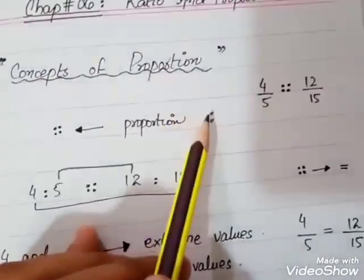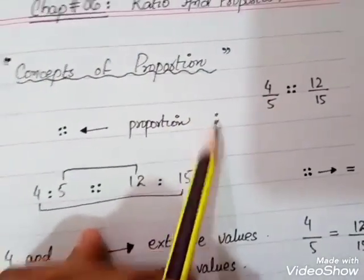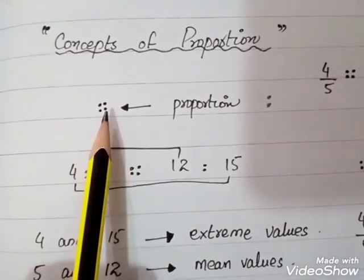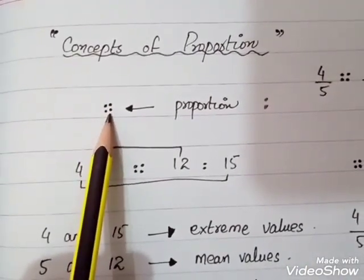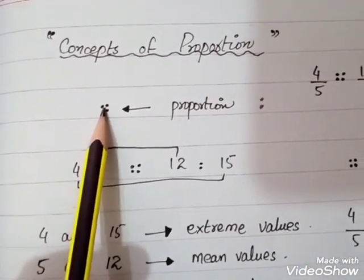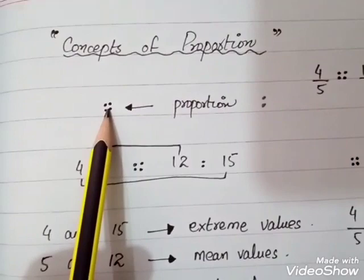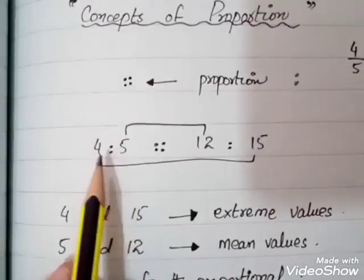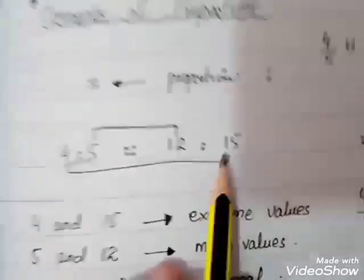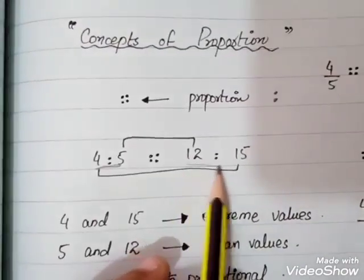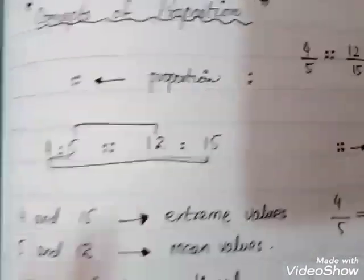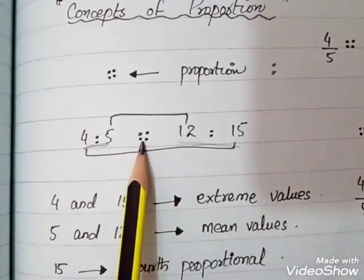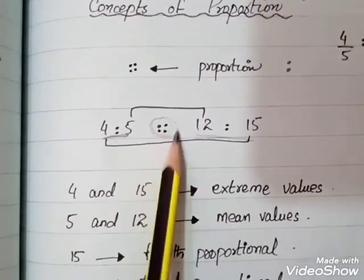We put the double dots to represent proportion. If you look here, one ratio is 4 to 5, and another ratio is 12 to 15. Now these are two ratios and we have compared them.